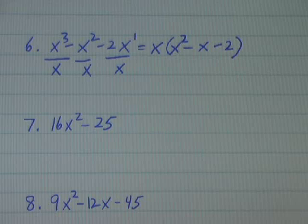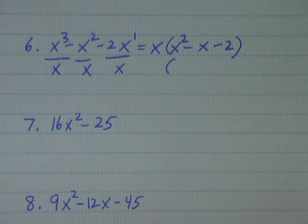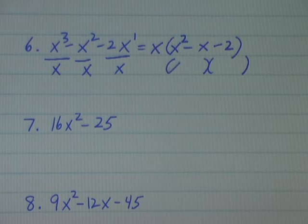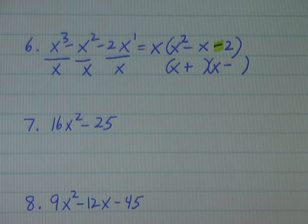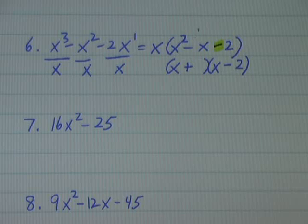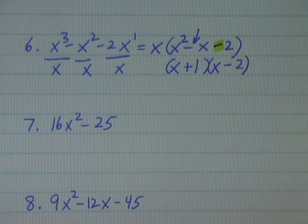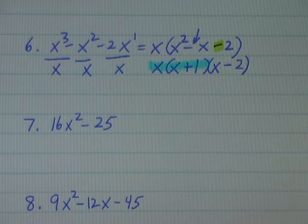Now I have a trinomial x squared minus x minus 2, which I'm going to try and factor as a product of two binomials. So x times x is x squared. I have a negative 2, and the only way I can get a negative number is to take a positive and multiply it by a negative. The only factors of 2 are 1 and 2, and 2 will be negative — because the sign of the larger number tells me so. So completely factored, x to the third minus x squared minus 2x is x times x plus 1 times x minus 2.